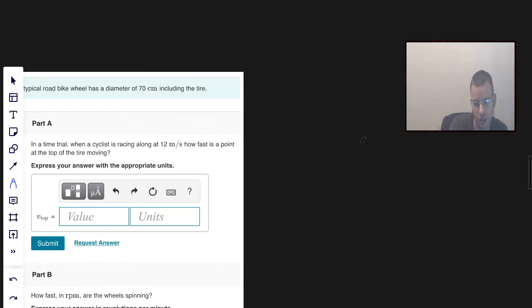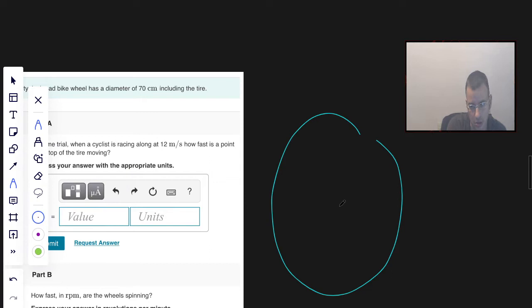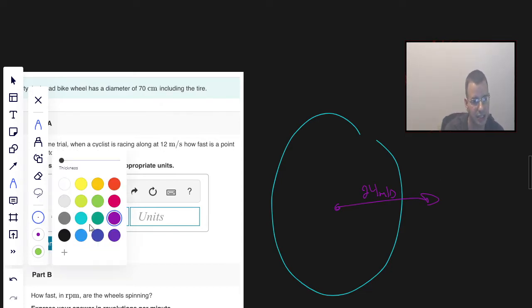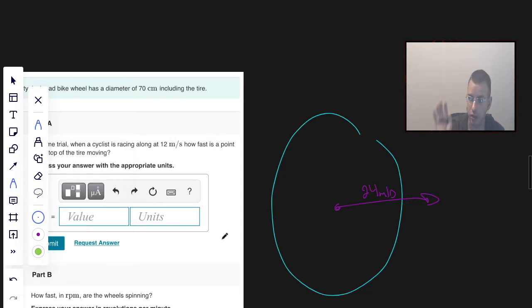Okay, so this is a bit challenging. The idea here is we have a wheel moving along this way at 24 meters per second. Part of the concept is that this wheel, the center of mass of this wheel, is moving.